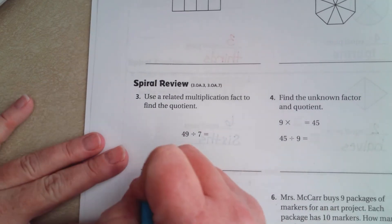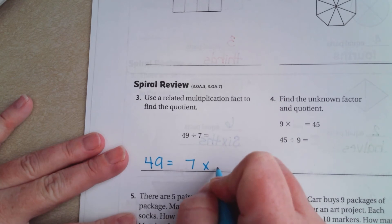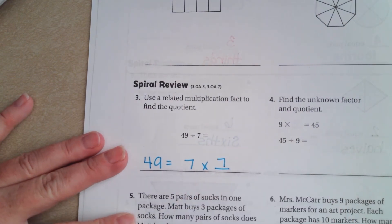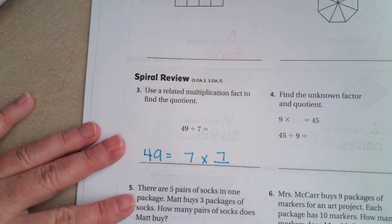We're going to use a related multiplication fact to find the quotient. So, what we're going to do is 49 equals seven times, what's that number? Seven.